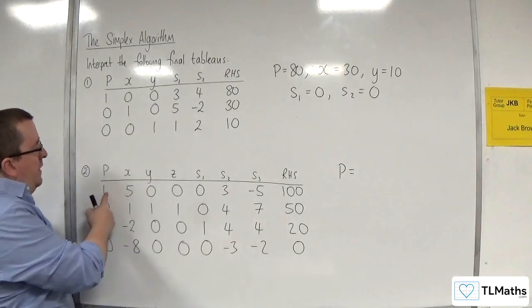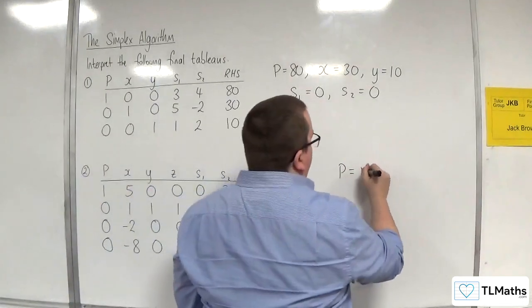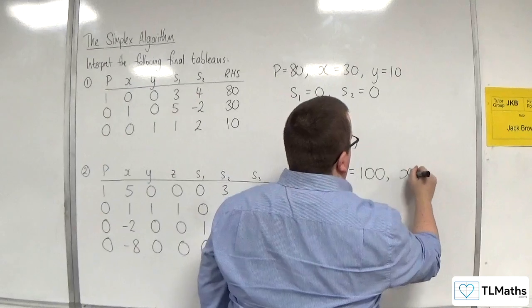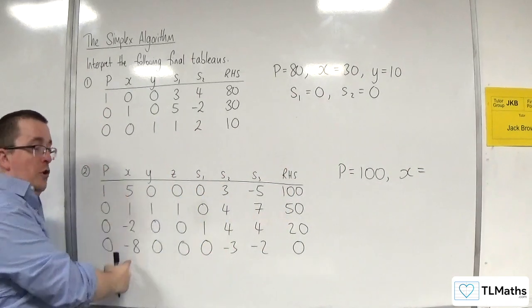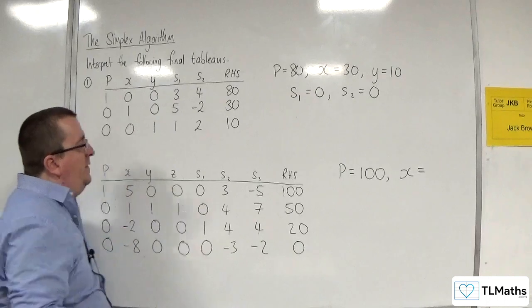We've got 1 and the rest are 0s, so P is 100. Now, the value of X is non-basic, so that means X is 0.